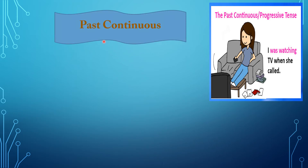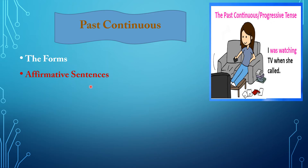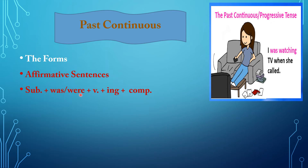Now we come to the other tense: the past continuous. There are three types of sentences. The affirmative sentence should begin by putting the subject, followed by verb to be — was or were — then the verb with -ing added to it, and the complement.